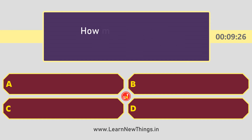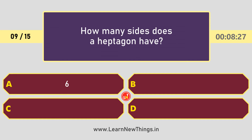How many sides does a heptagon have? The answer is 7.